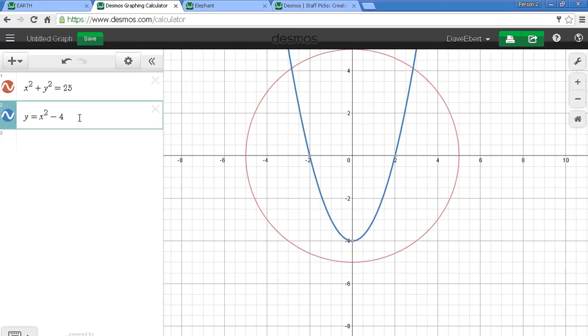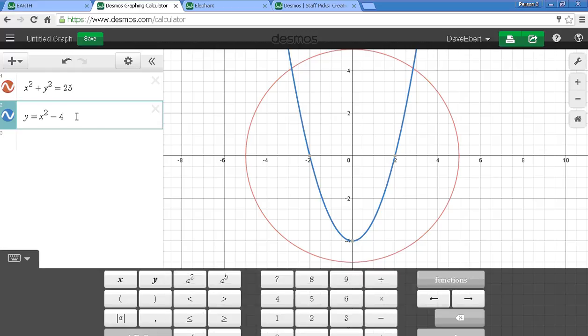To restrict this, I'm going to use the bracket key. If I press my shift key, I have that curvy brace that will allow me to do a restriction. I can say I only want this curve to exist for certain x values.